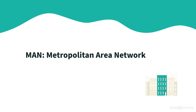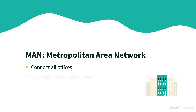Some businesses have multiple locations spread across a large metropolitan area. Some large cities, like Chicago, have a metropolitan area network, or a MAN, available, which allows a business to connect all of their offices to a MAN, and then those different offices can communicate between one another at a very high speed.